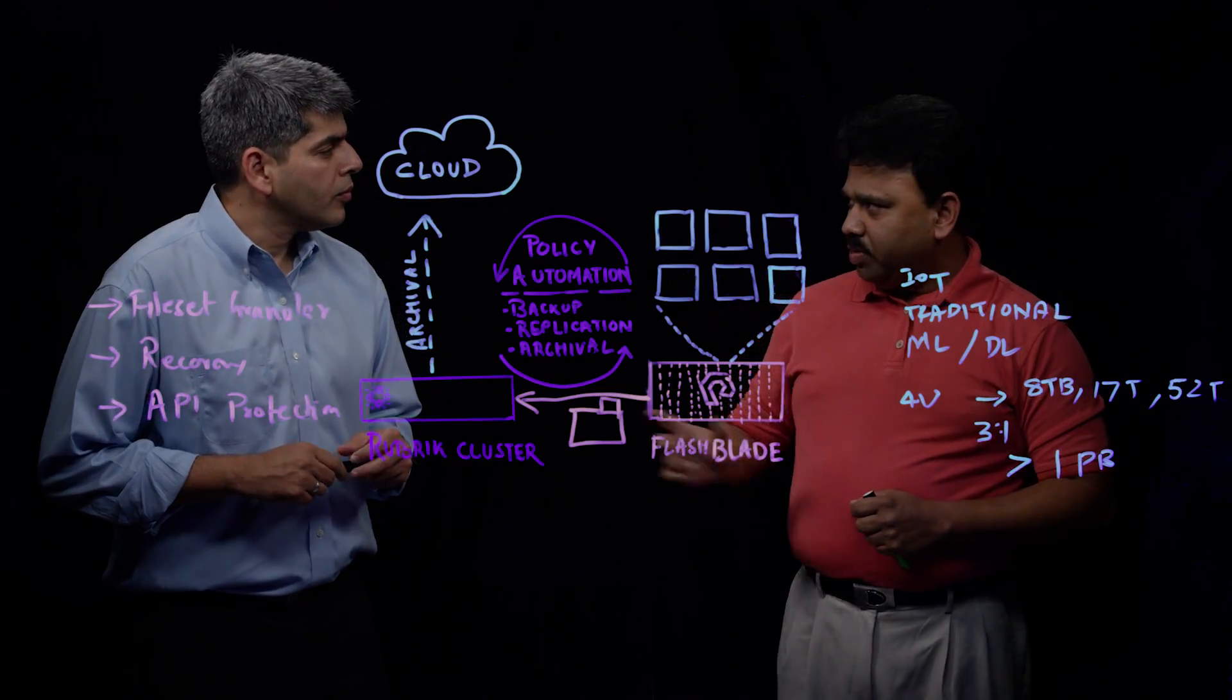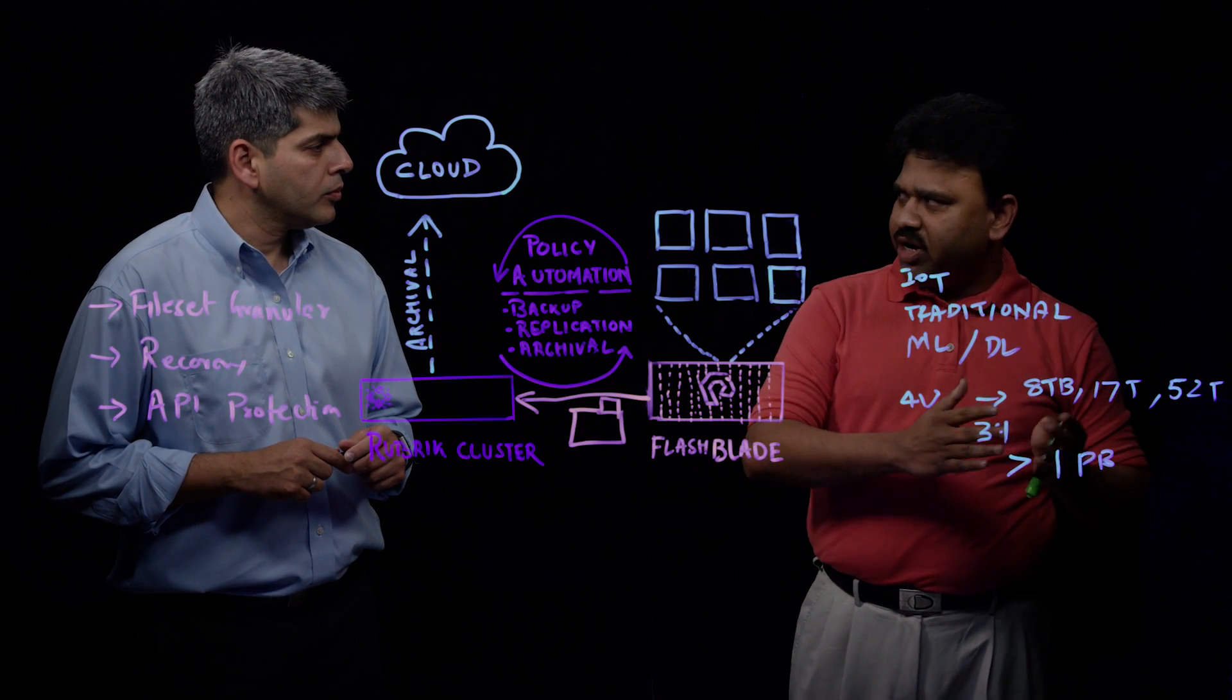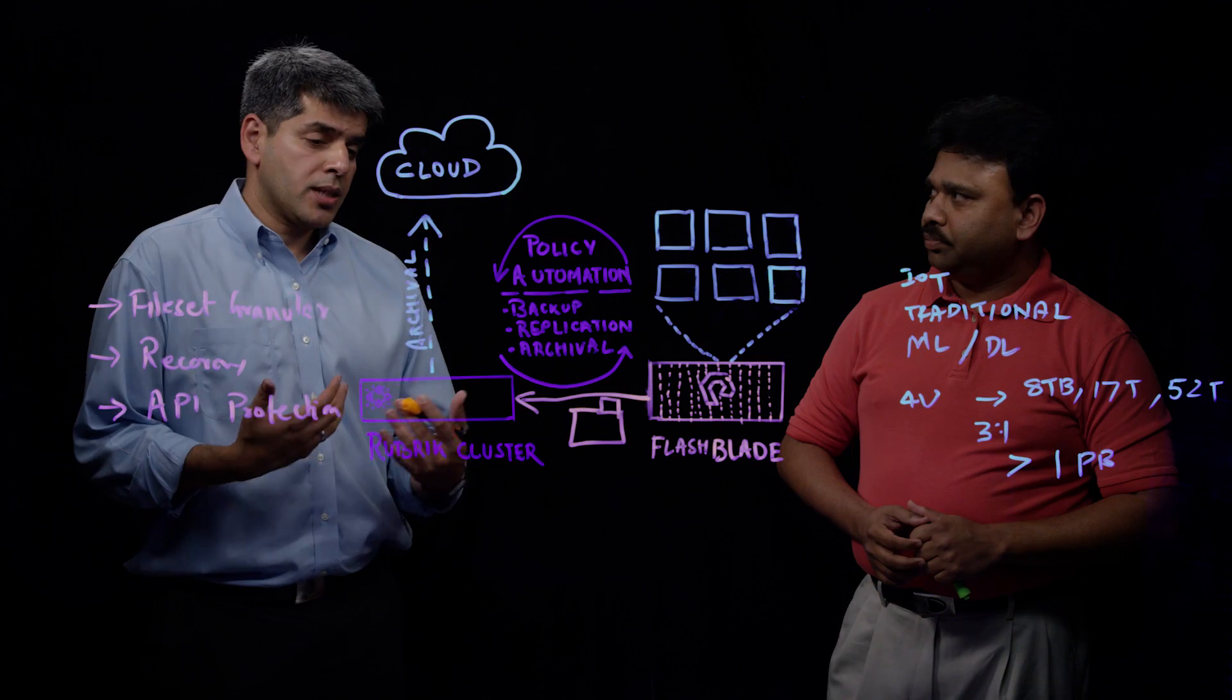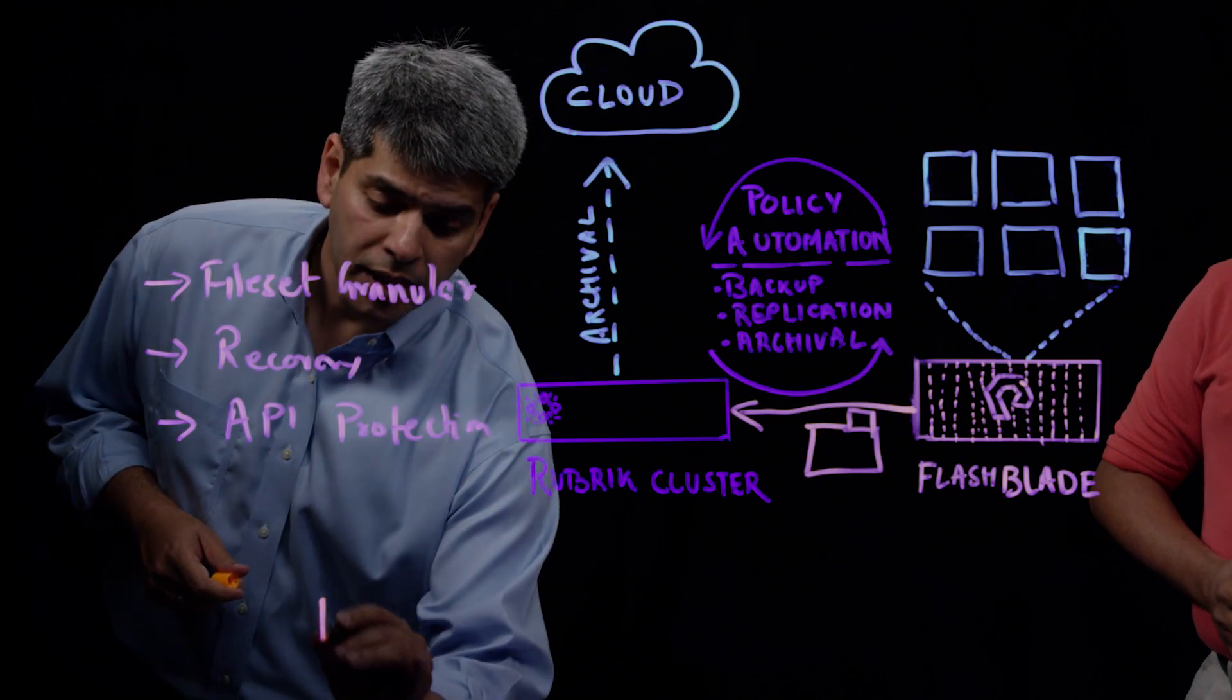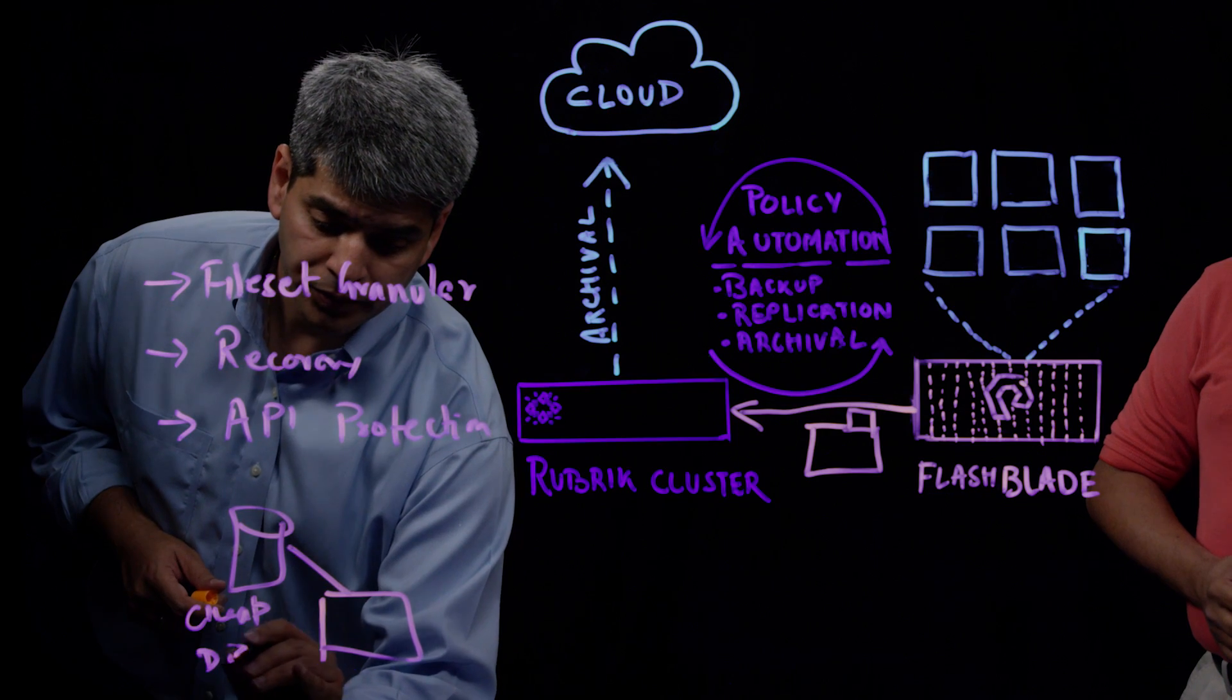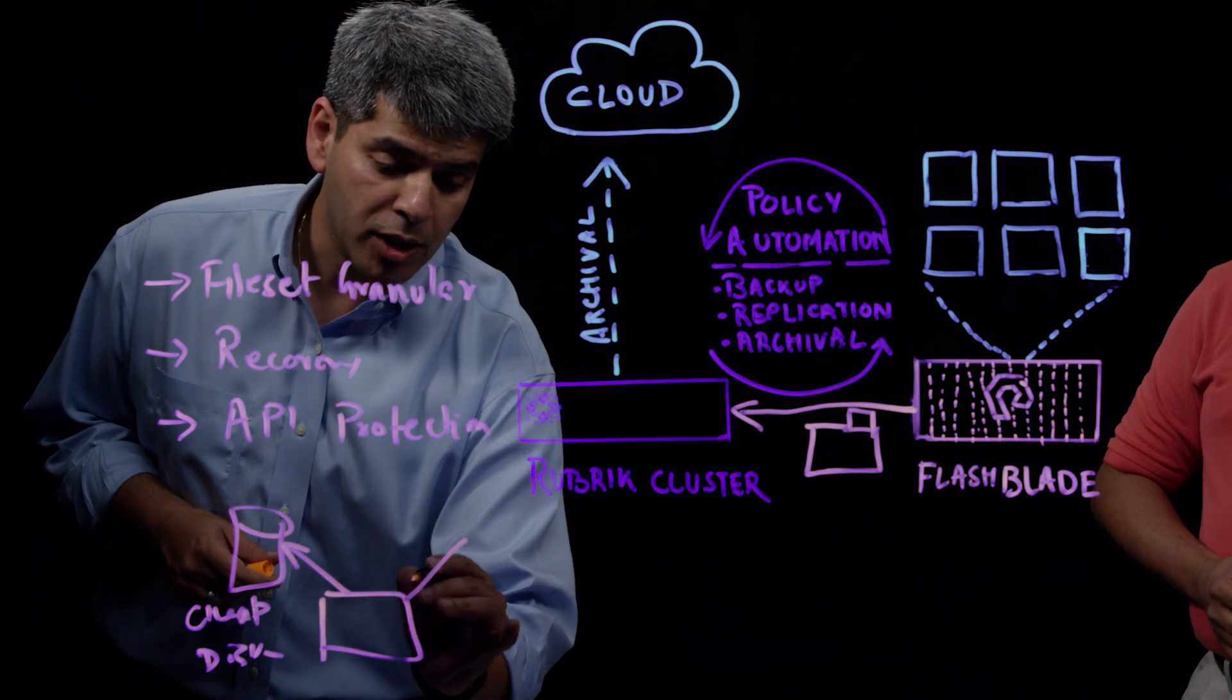Can you comment about the restore capabilities? Can you backup to your Rubric appliance and restore the data to a different NAS device if you want? That is true. So natively, once Rubric cluster has saved the data or protected the data from Flash Blade, we can have our Rubric cluster connected to another NAS device, which is say a cheap disk storage and recover to another NAS device from Flash Blade.